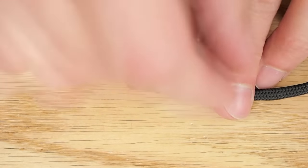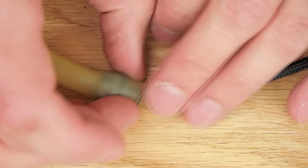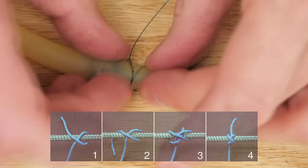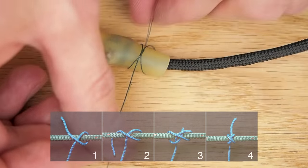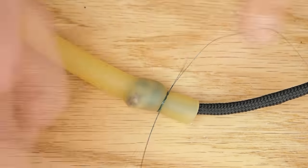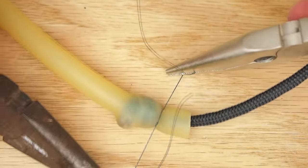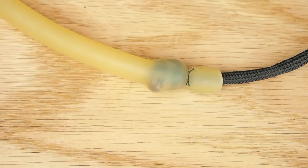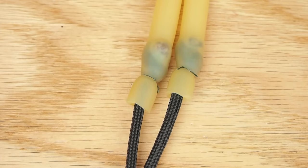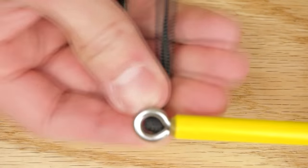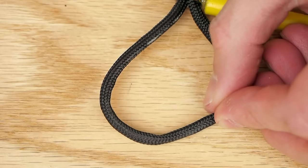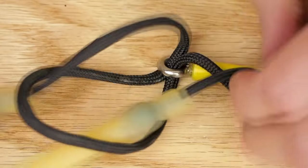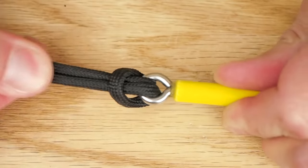To secure the paracord to the latex I used braided fishing line and tied a constrictor knot with the fishing line. Monofilament fishing line or any really strong thread would also work. The constrictor knot is a cool little knot that gets super tight without ever loosening. There's a link in the description to the constrictor knot image. To attach the band to the spear I slid the paracord through the screw eye forming a loop, then fed the latex through the loop and pulled the latex end to tighten the knot.